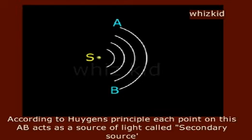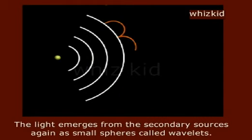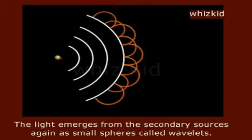According to Huygens Principle, each point on this AB acts as a source of light called secondary source. The light emerges from the secondary sources again as small spheres called wavelets.